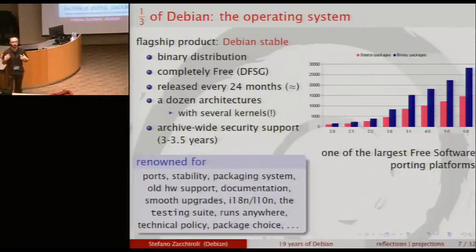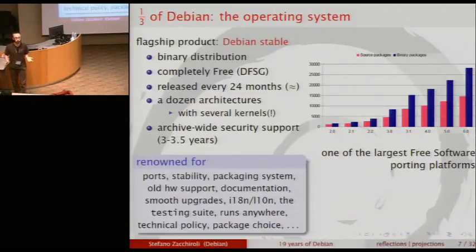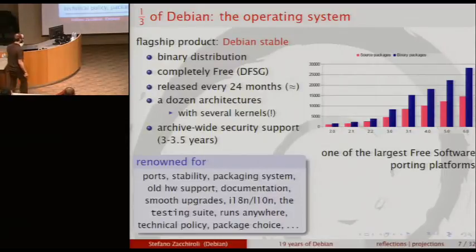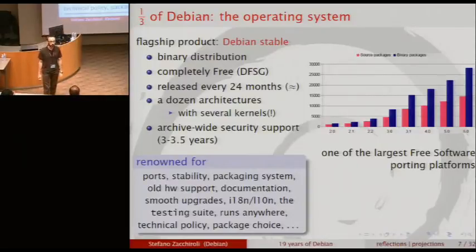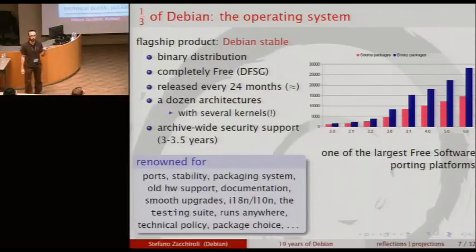It's a binary distribution, meaning we compile the software and you just install it using the package manager. It's completely free — nothing non-free in the Debian main archive. It's released more or less every two years. We support something like twelve different hardware architectures, and we support more than one kernel — not only Linux, but also FreeBSD and GNU Hurd. We also offer archive-wide security support for all packages. Nowadays we have something like 35,000 binary packages in the archive.